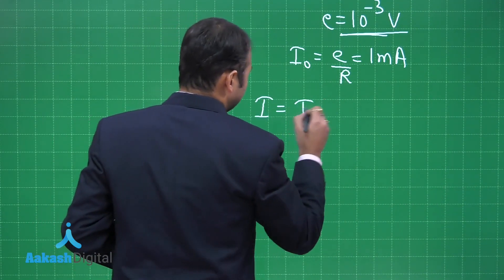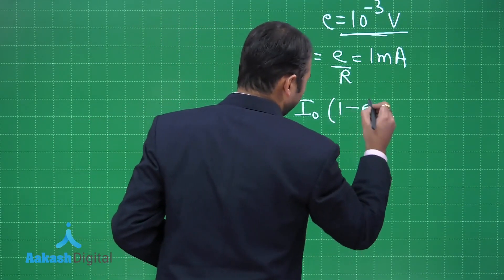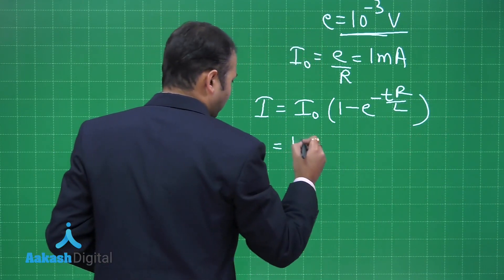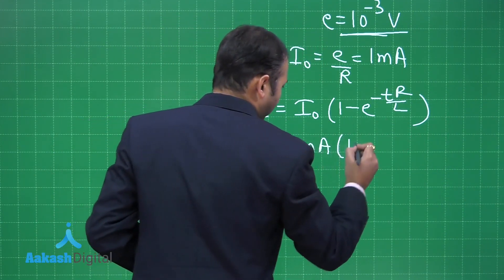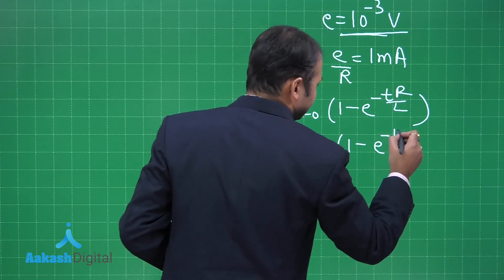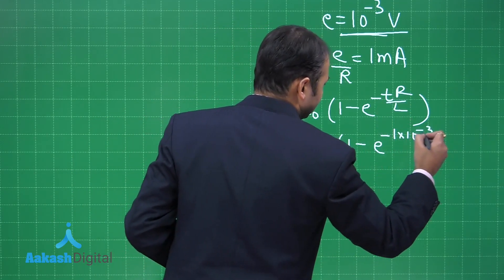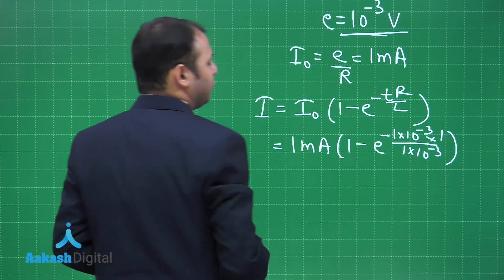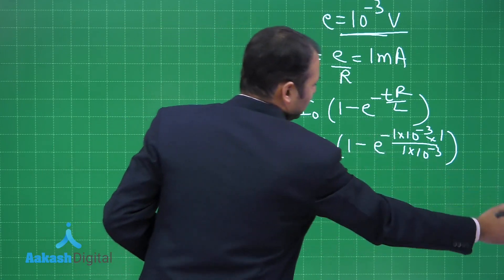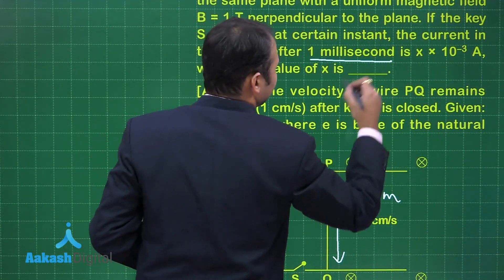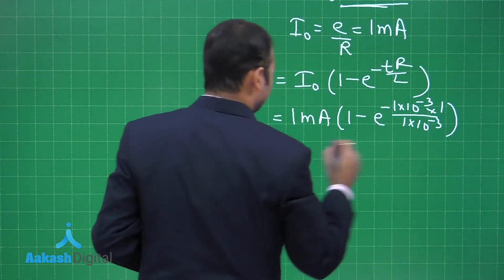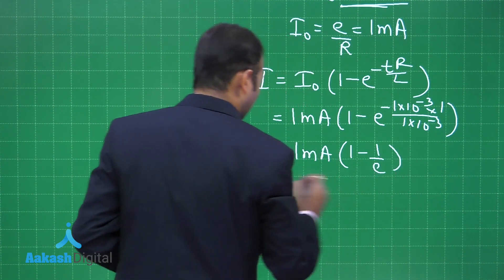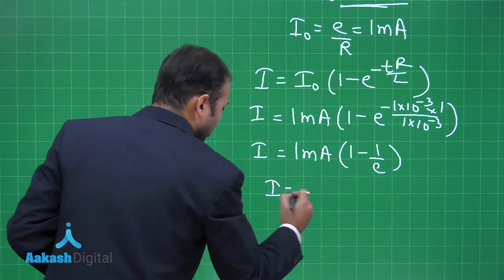At any instant when the key is closed and the current has not yet reached its maximum value, the current I can be written as I naught times (1 minus e to the power minus TR by L). Here I naught is 1 milliampere. At t equals 1 millisecond, with R equals 1 Ohm and L equals 1 milli Henry (10 to the power minus 3), substituting these values gives us the current at 1 millisecond.